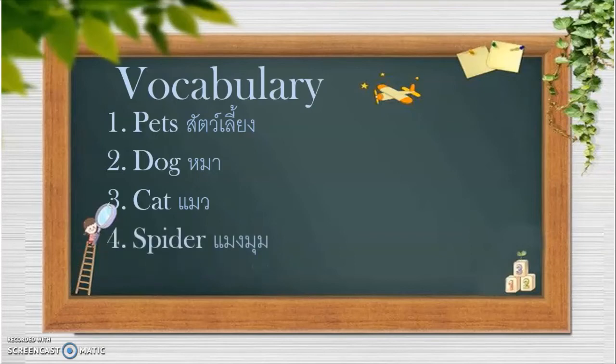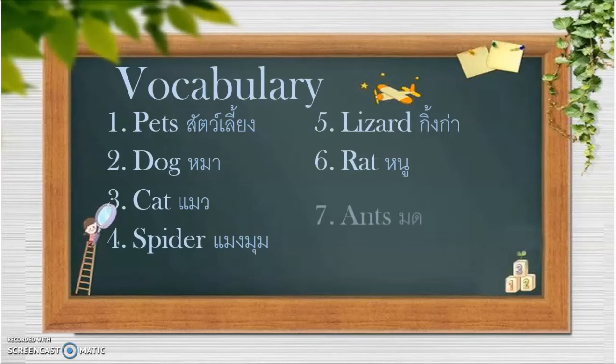Number four, spider. Spider. Number five, lizard. Lizard. Number six, rat. Rat. Number seven, ant. Ant. Very good.